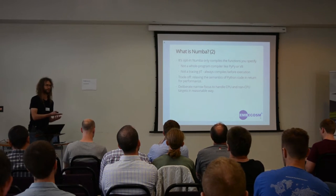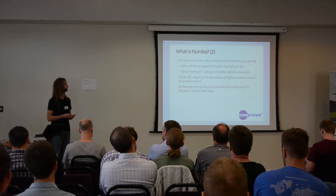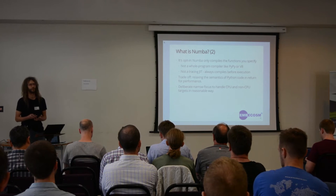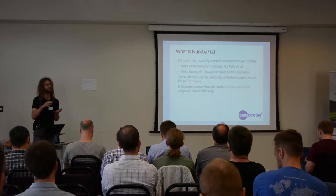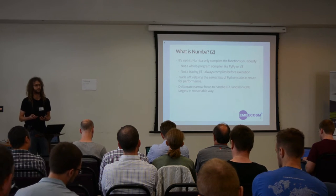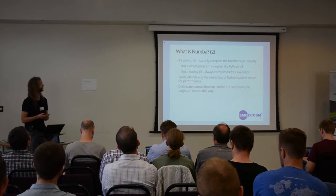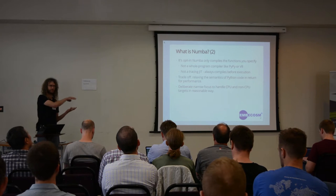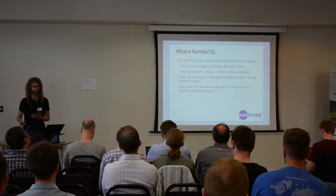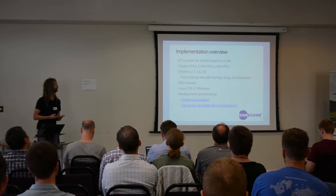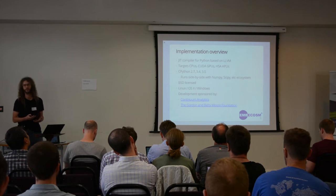Numba doesn't do anything automatically — you have to tell it exactly which functions you want it to compile. It's not a whole program compiler like PyPy or V8, and it's not a tracing JIT, so it doesn't execute anything before it's compiled; it always compiles code that you've told it to compile and then executes it. The reason you have to opt in for specific functions is because there's a trade-off: it doesn't support all the semantics of Python code. You're trading some Python semantics in return for better performance. That deliberate narrow focus allows it to handle CPU and non-CPU targets in a reasonable way without making it too difficult or restrictive to use. It's a JIT compiler for Python based on LLVM — it has a CPU back-end but also a back-end for NVIDIA's CUDA GPUs, and more recently AMD's HSA APUs.